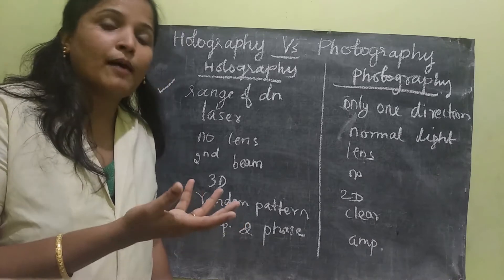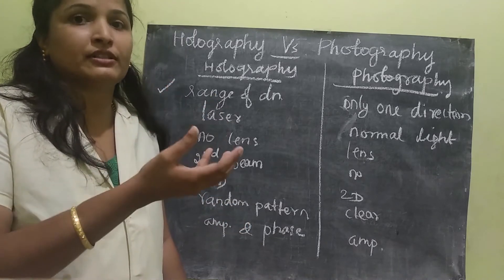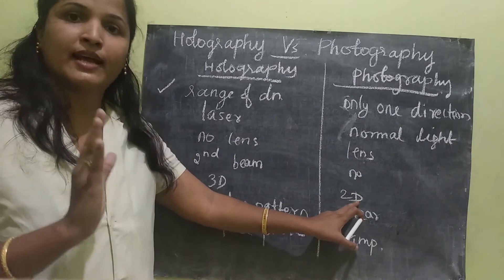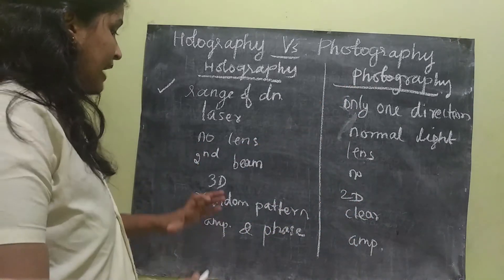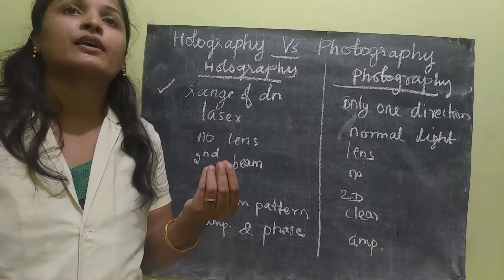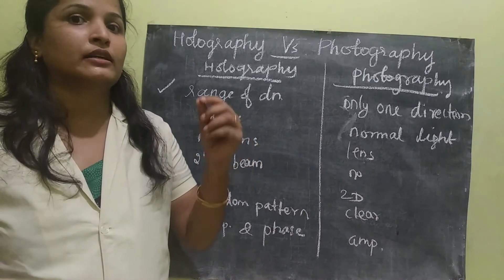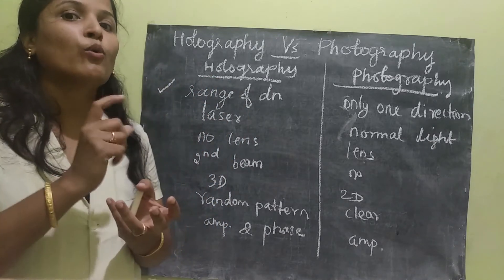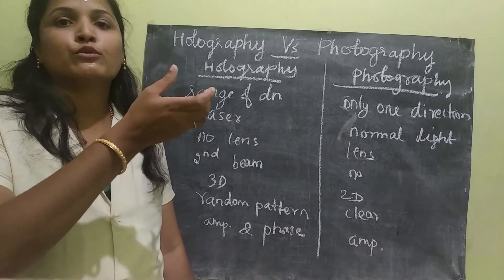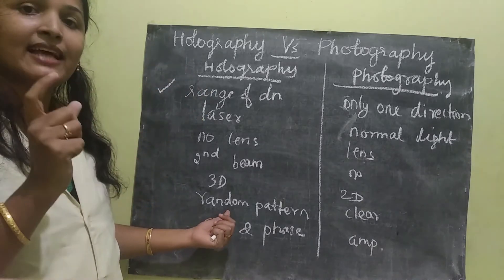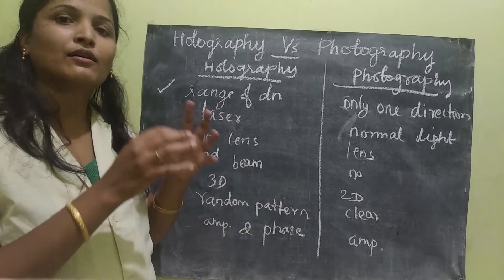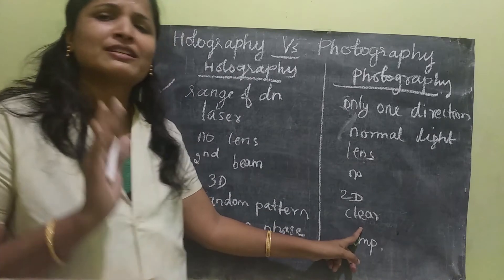A rudimentary three-dimensional effect can be obtained in photography, but actual three dimensions cannot be obtained — only two-dimensional images. Next difference is random pattern. You can see in some books a shining sticker, which is actually one example of a hologram. In that you can see fine granules shining when you change the viewing angle — that is the random pattern. The image is not clear; some random fine granules will be seen. But in photography you can see a clear picture.